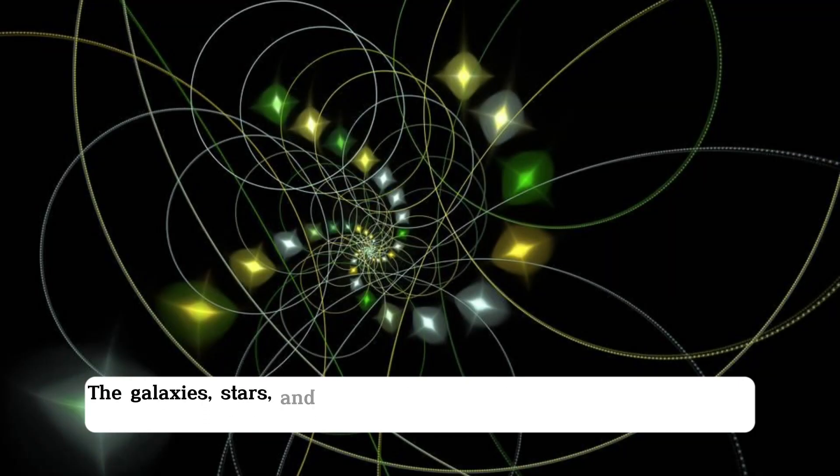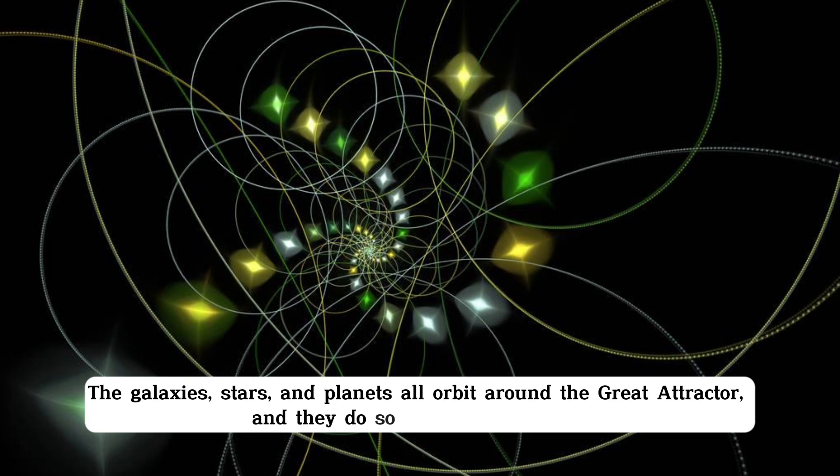The galaxies, stars, and planets all orbit around the Great Attractor, and they do so at different speeds.